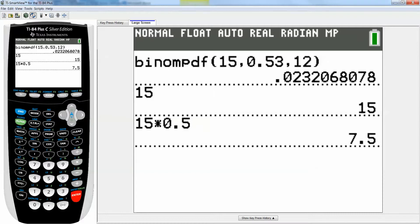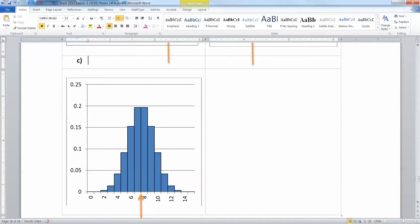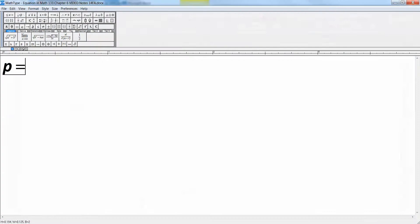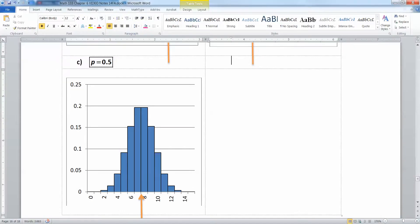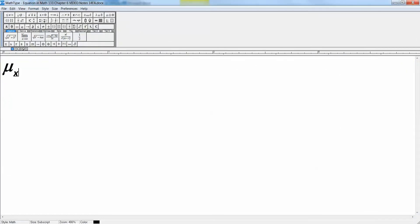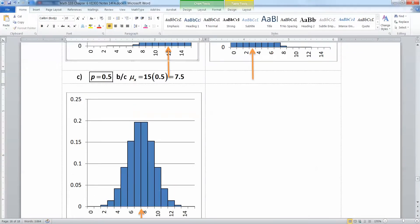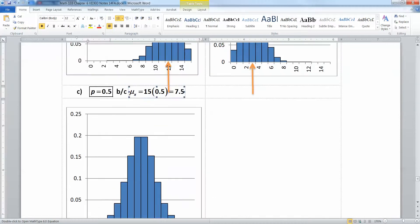That would mean that your mean is 7.5. And if you look at this one, the mean is right there at the 7 to 8 mark, right? So this one is p equals 0.5. And you can see it because the mean is, mu sub x is equal to 15 times 0.5 which is 7.5. And remember that's the balance point of your histogram. Alright so that one was the easy one.